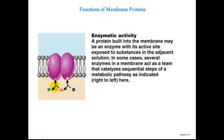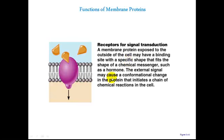Some membrane proteins act as enzymes — biological catalysts. These are proteins that help facilitate a chemical reaction without being changed themselves. Membrane proteins are also important in signal transduction, which occurs when a chemical binds to a transmembrane protein. That transmembrane protein undergoes a change in shape, which kicks off a bunch of chemical reactions within the cell. This will be very important in the endocrine system in terms of how hormones function in relation to their hormone receptors.